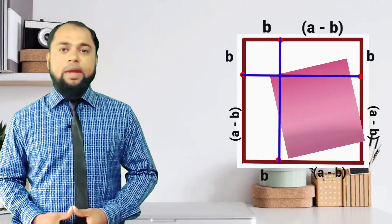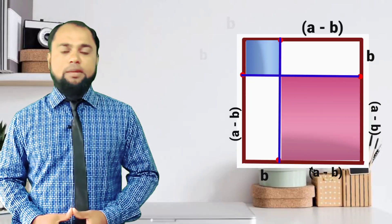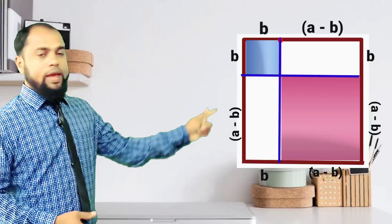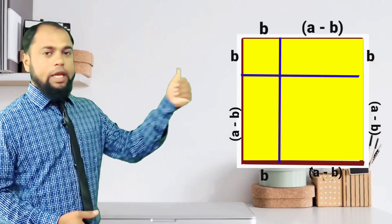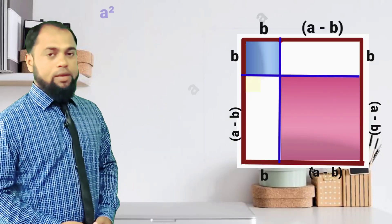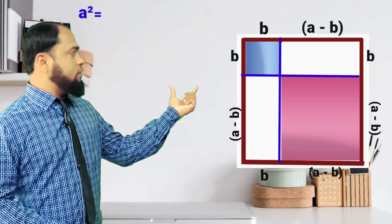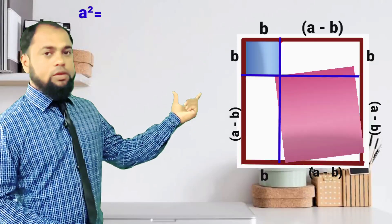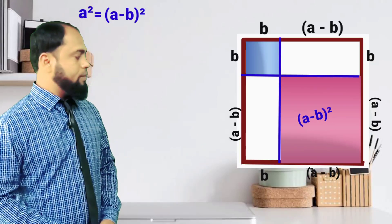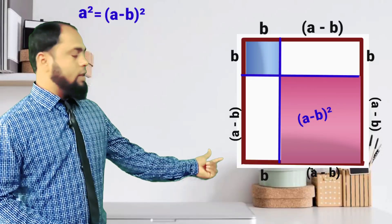One square is of side a minus b and the other is of side b. The area of the total square is a into a, which is nothing but a squared. This equals the area of the first square, that is (a minus b) whole square, which is (a minus b) into (a minus b).